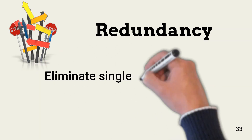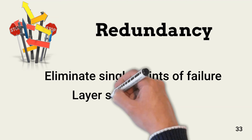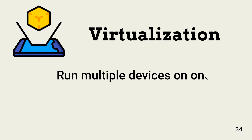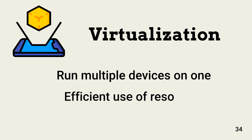Redundancy is about eliminating single points of failure. When a single point of failure stops working or is compromised, business processes fail or security is compromised. Security architecture should include redundant components. Further, there should be multiple security controls between a threat actor and its target. Virtualization is the emulation of one device on a different device — for example, a virtual server might run on another server configured for virtualization. Virtualization results in the most cost-effective use of resources.